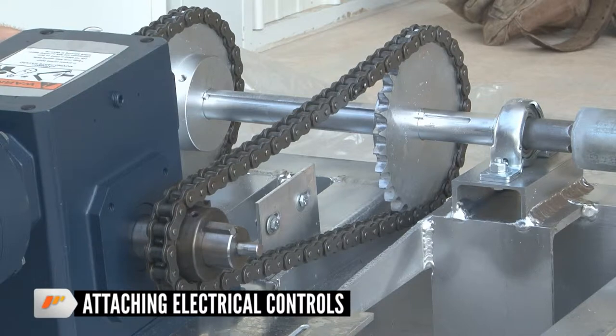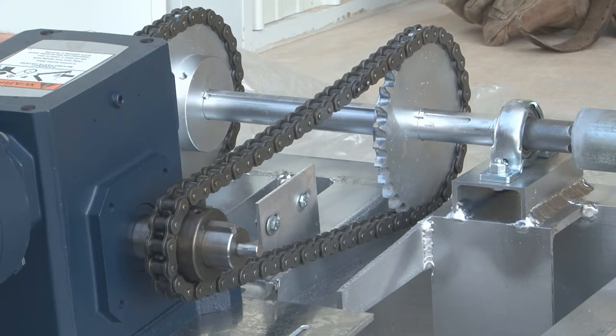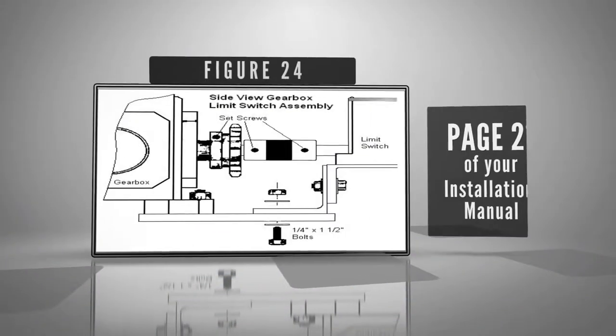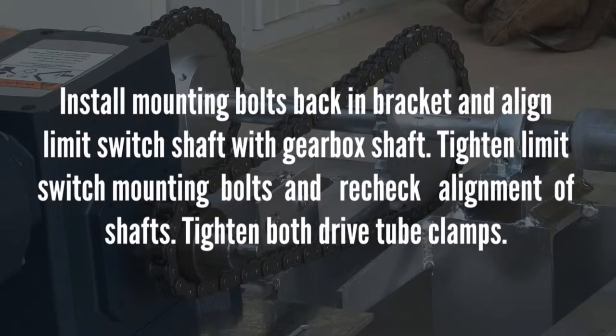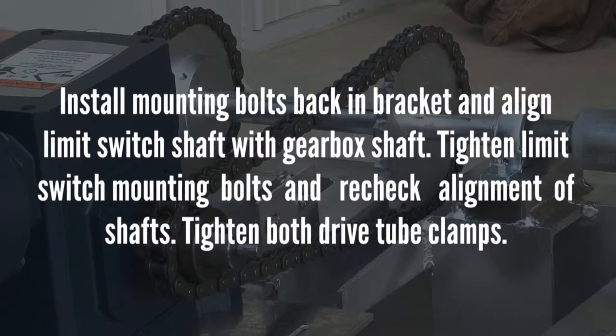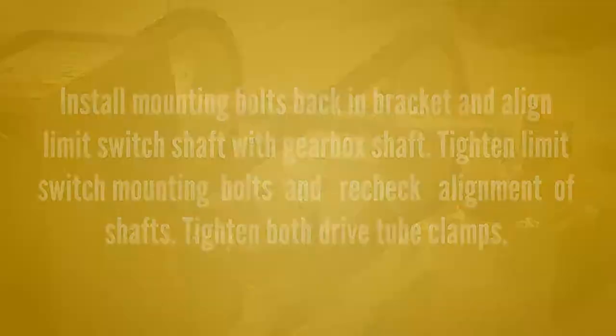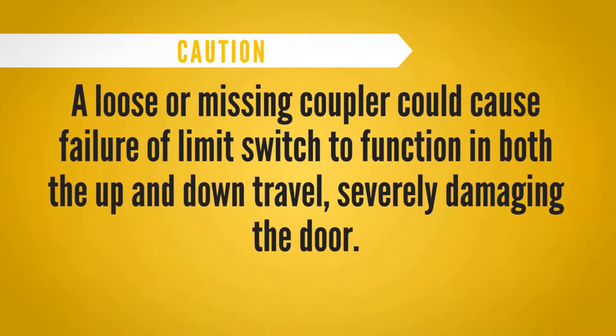Attaching electrical controls. Remove two quarter inch bolts from limit switch mounting bracket. Loosen set screw on open end of drive coupler. Slide drive tube over gearbox shaft. See figure 24, page 21. Install mounting bolts back in bracket and align limit switch shaft with gearbox shaft. Tighten limit switch mounting bolts and recheck alignment of shafts. Tighten both drive tube clamps. Caution: A loose or missing coupler could cause failure of limit switch to function in both the up and down travel, severely damaging the door.